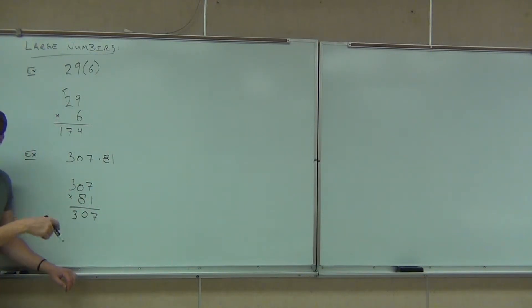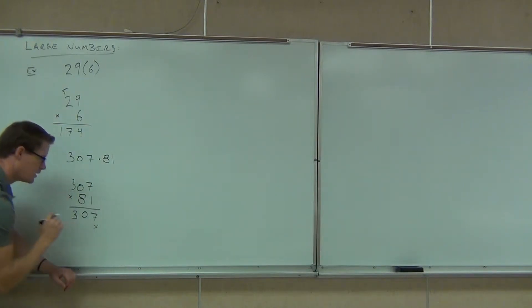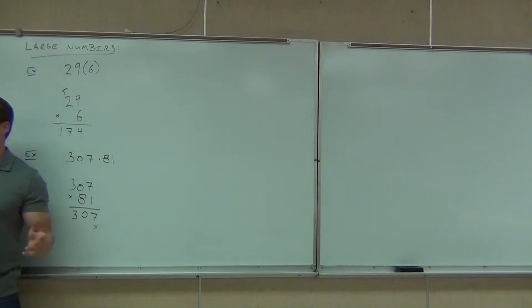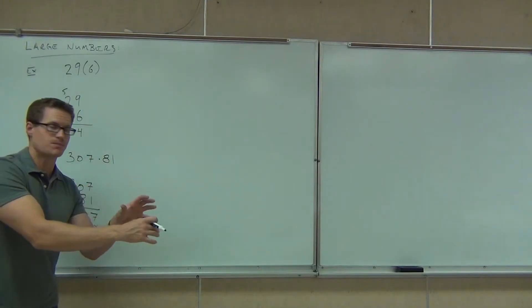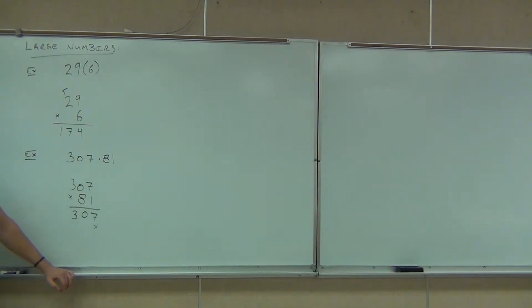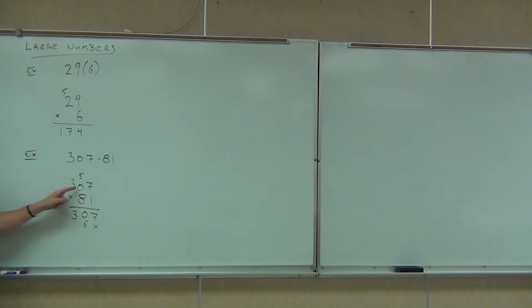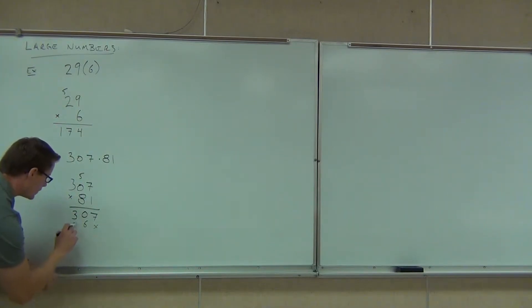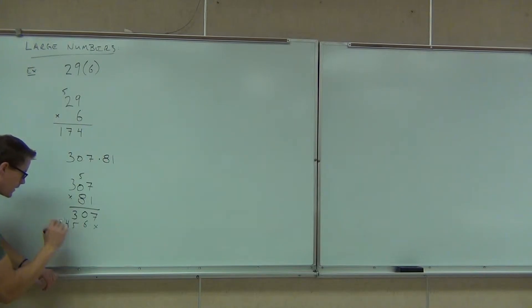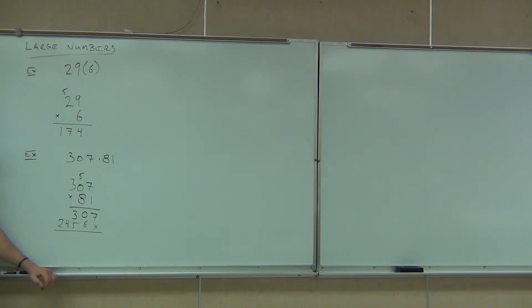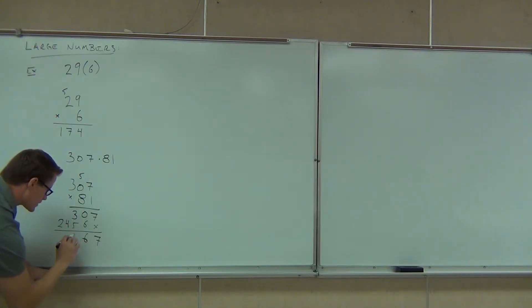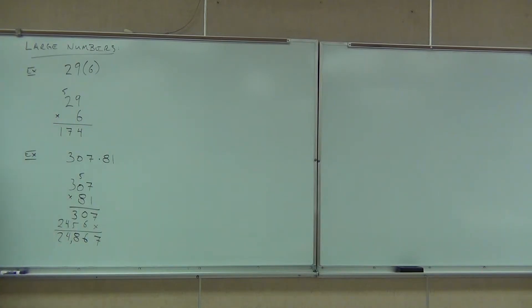I honestly prefer an X so I don't forget the place value holder. So we move on: 8 times 7 is 56 — put our 6, carry the 5. Then 8 times 0 is 0, still add the 5. And lastly, 8 times 3 — 24. Now what do we do? Add. Since these are already lined up, we add digit by digit, because really we're doing multiplication separately and adding the products together at the end. We get 7, 6, 8, 4, 2 — making this 24,867.